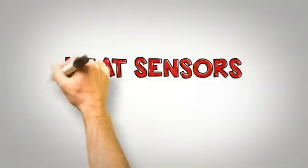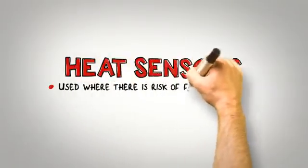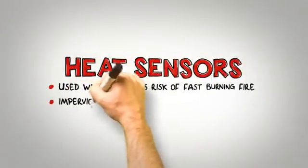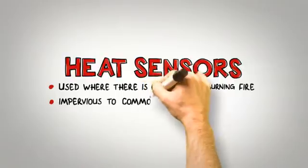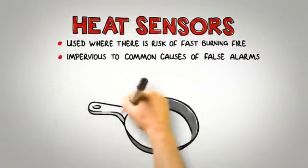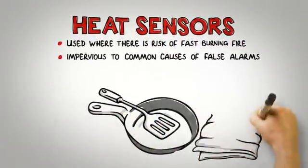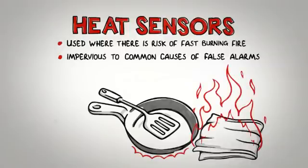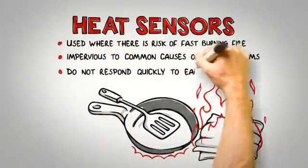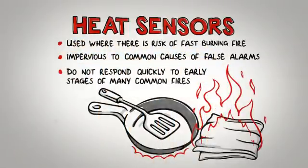Heat sensors are used in environments where there is a risk of a fast burning fire. These devices are virtually impervious to the most common causes of false alarms and are primarily used in areas such as restaurant kitchens. The reason they aren't used throughout a building is because they do not respond quickly to the early stages of many common fires.